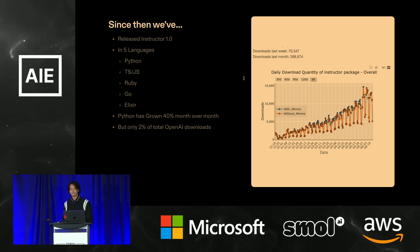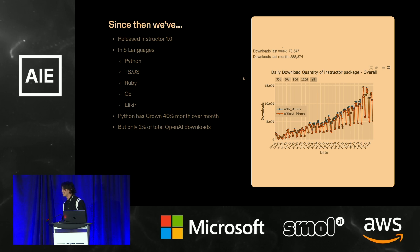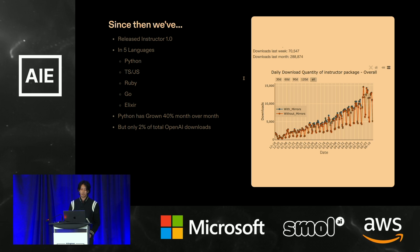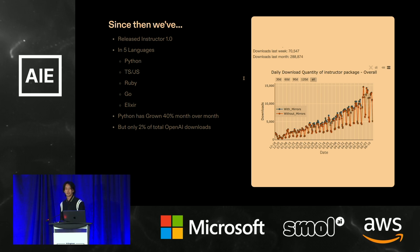Since then, we've released 1.0. We've launched in five languages: Python, TypeScript, Ruby, Go, and Elixir. We just built out a version in Rust as well. It's mostly because this is just the exact 600 lines of code that you do not want to write yourself. In the Python library, we've seen 40% growth month over month, and we've only had about 2% of the coverage of the OpenAI download, so there's still tons of room to grow in terms of making these APIs more ergonomic.